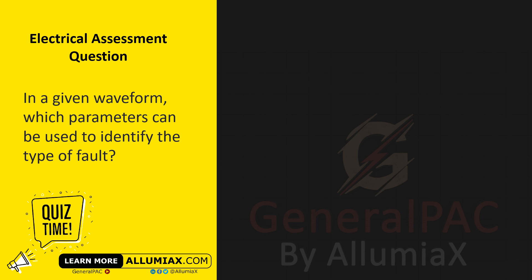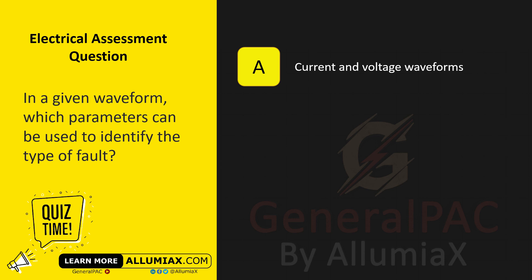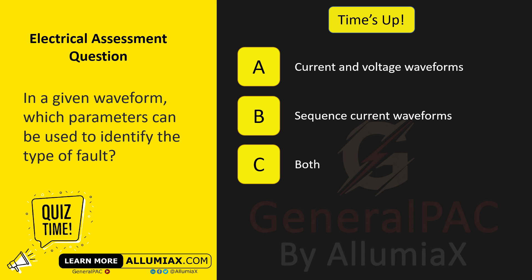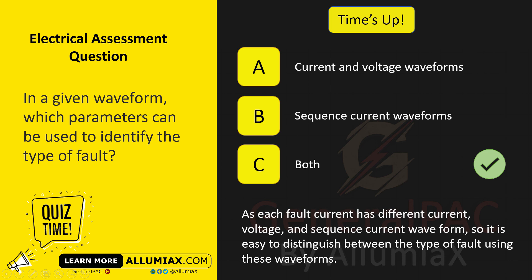In a given waveform, which parameters can be used to identify the type of fault? A. Current and voltage waveforms. B. Sequence current waveforms. C. Both. The answer is C — both. As each fault has different current, voltage, and sequence current waveforms, it is easy to distinguish between fault types using these waveforms.